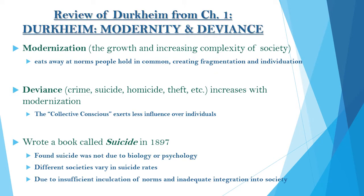A few more terms on Durkheim: modernization and deviance. Durkheim, Marx, and Weber all viewed modernization as tearing apart society in different ways. For Durkheim, modernization was eating away at social norms people hold in common, creating fragmentation and individuation — people not viewing themselves as one big society anymore, but as individuals. When people become more individualized, the collective conscience gets weaker, bringing about more chaos and conflict. He also saw deviance — anything that goes against social norms of acceptability — as another tragic offshoot of modernization.